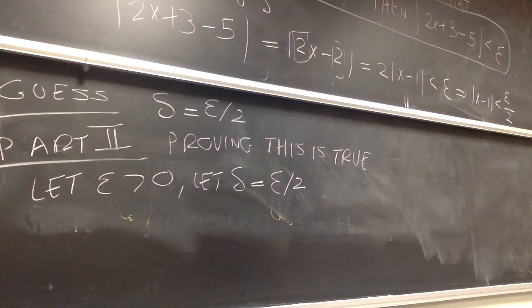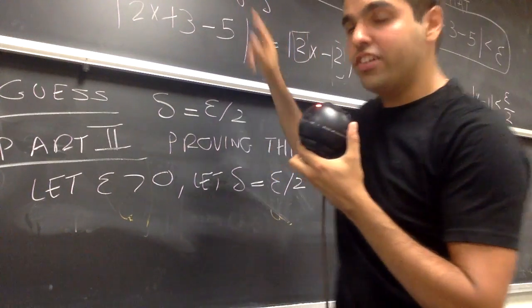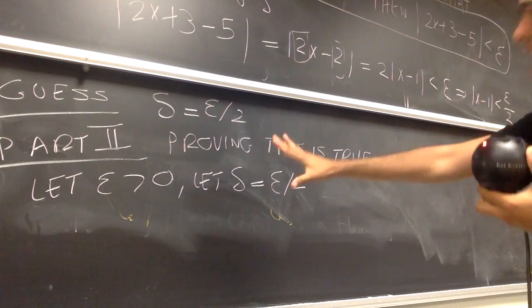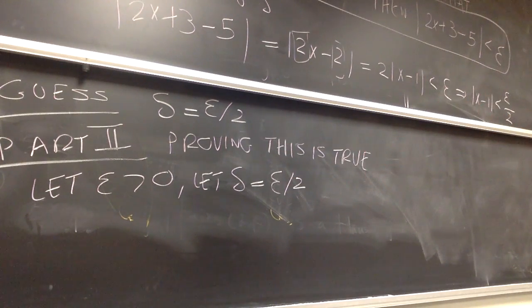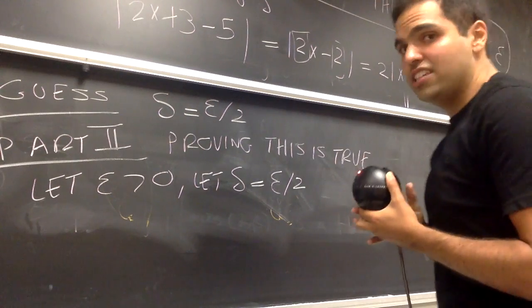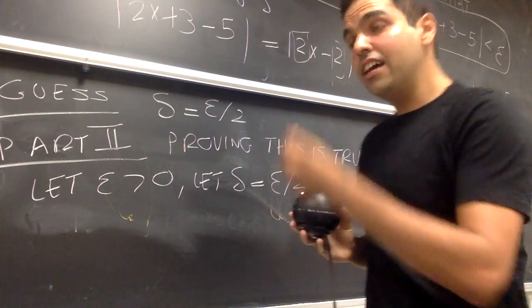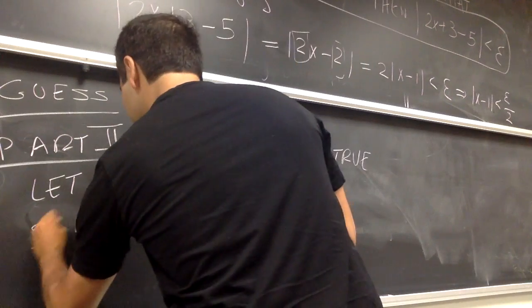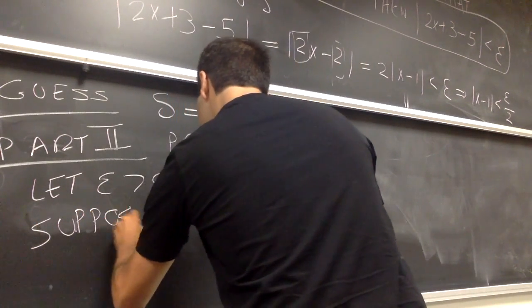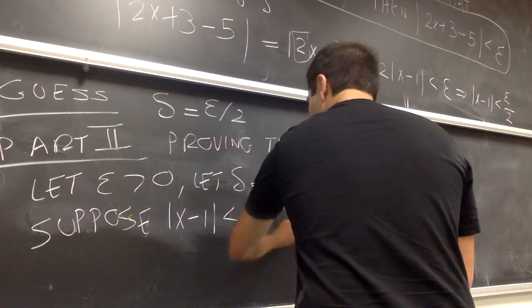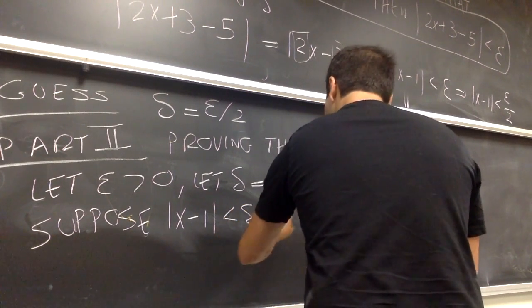And, notice what we're really doing now. We're going back to this original expression, and we're now going from left to right. So, we have Epsilon, we have our Delta. All we want to show is that if x minus 1 is less than Delta, then 2x plus 3 minus 5 is less than Epsilon. So, we just say, suppose x minus 1 is less than Delta, which is Epsilon over 2.